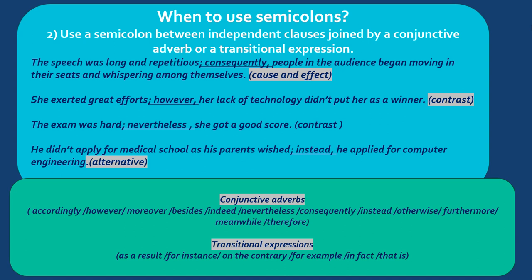The second use of semicolons is a continuation of the first use. We also combine two independent clauses, but we add a conjunctive adverb or a transitional expression that gives the relationship between the two clauses. We put the first independent clause, then a semicolon, then the conjunctive adverb or transitional expression and a comma, and then the second independent clause. For example: 'The speech was long and repetitious; consequently, people in the audience began moving in their seats and whispering among themselves.' The first clause is the cause of the second.